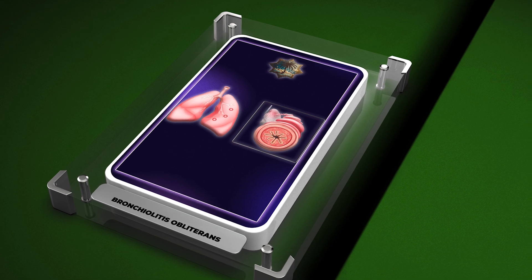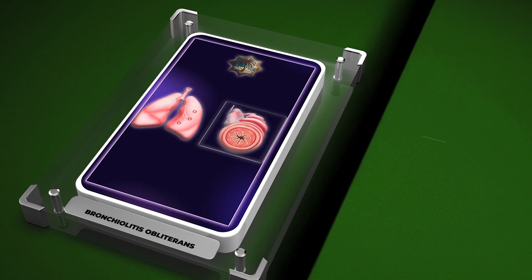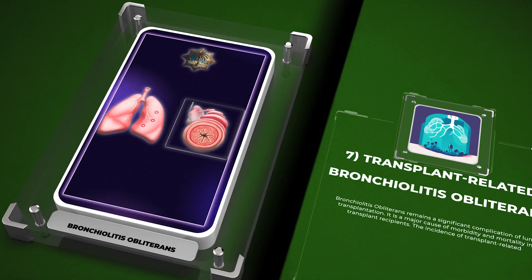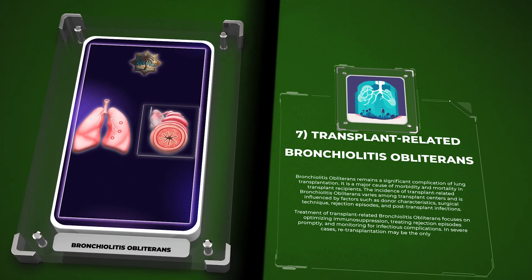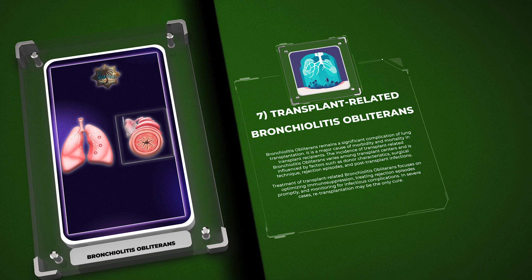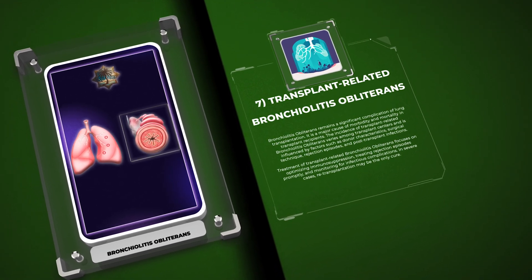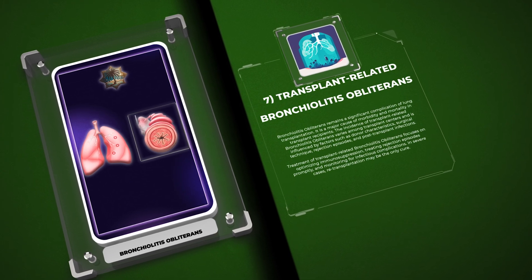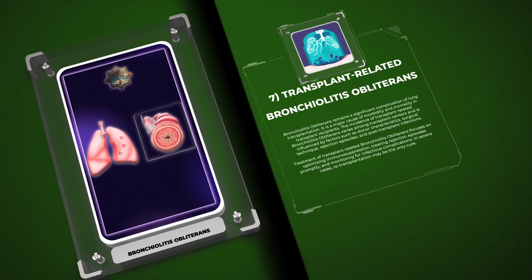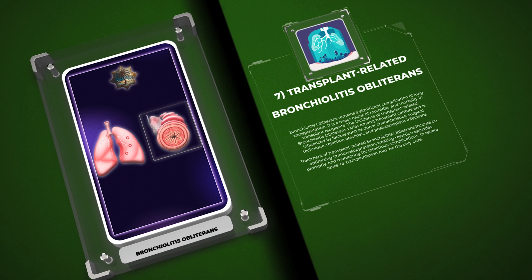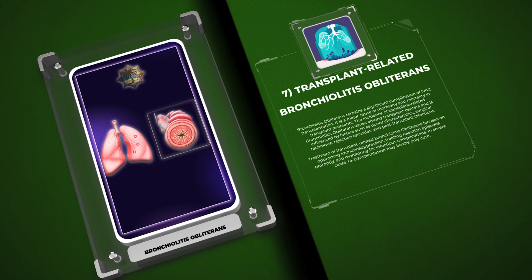Bronchiolitis obliterans remains a significant complication of lung transplantation and is a major cause of morbidity and mortality in transplant recipients. The incidence of transplant-related bronchiolitis obliterans varies among transplant centers and is influenced by factors such as donor characteristics, surgical technique, rejection episodes, and post-transplant infections. Treatment focuses on optimizing immunosuppression, treating rejection episodes promptly, and monitoring for infectious complications. In severe cases, re-transplantation may be the only cure.